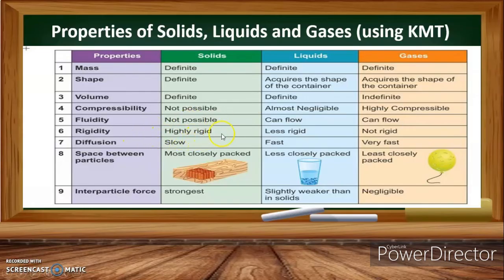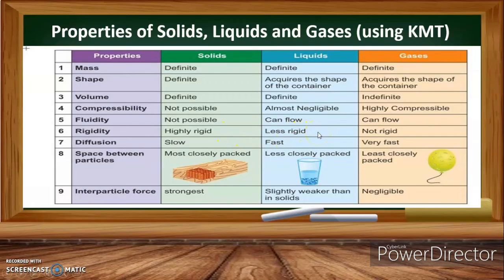For rigidity: solids are highly rigid or very hard; liquids are less rigid; and gases are not rigid at all. In solids, the particles cannot move about—they only vibrate about their mean position. In liquids, particles can move a little because of a small amount of space between them. In gases, particles are not rigid because they can flow and move freely or randomly.